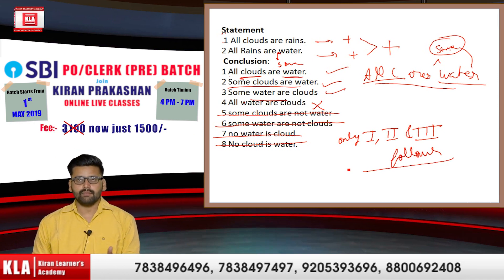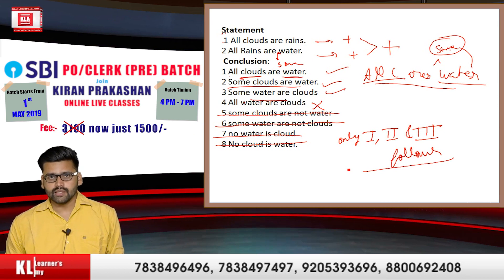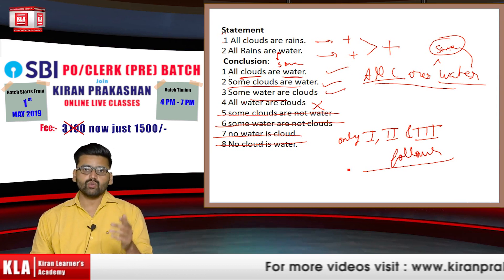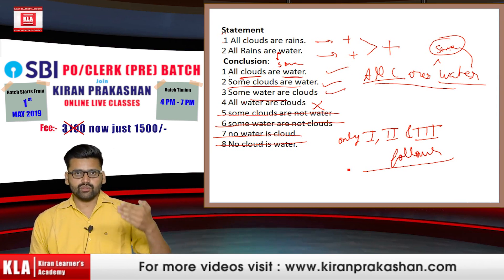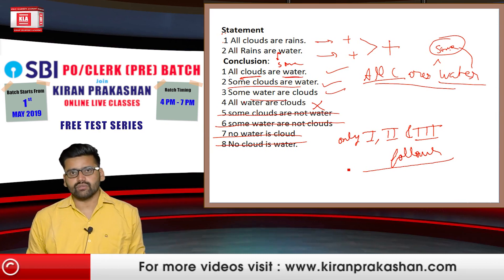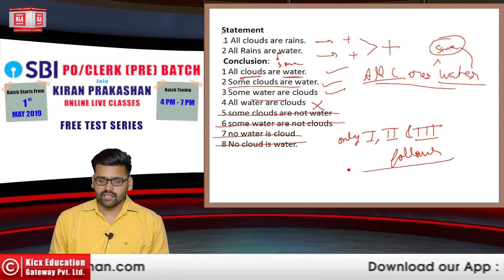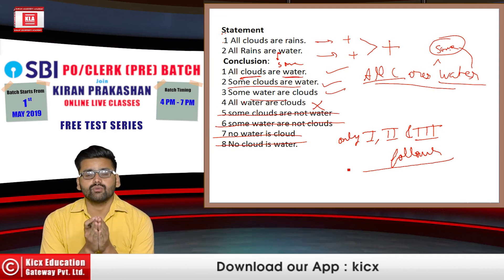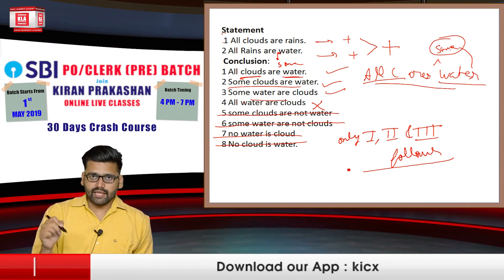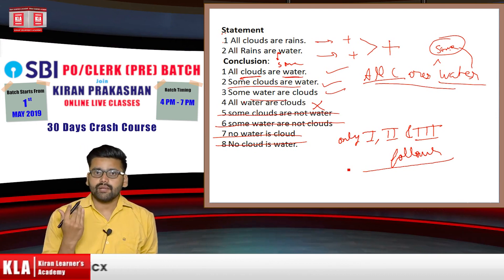This was syllogism type one. If you practice and look at previous year questions, you will be able to attempt syllogism. Now syllogism type two involves two statements and one conclusion, or one statement and one conclusion — and when both statements are present, students get confused.